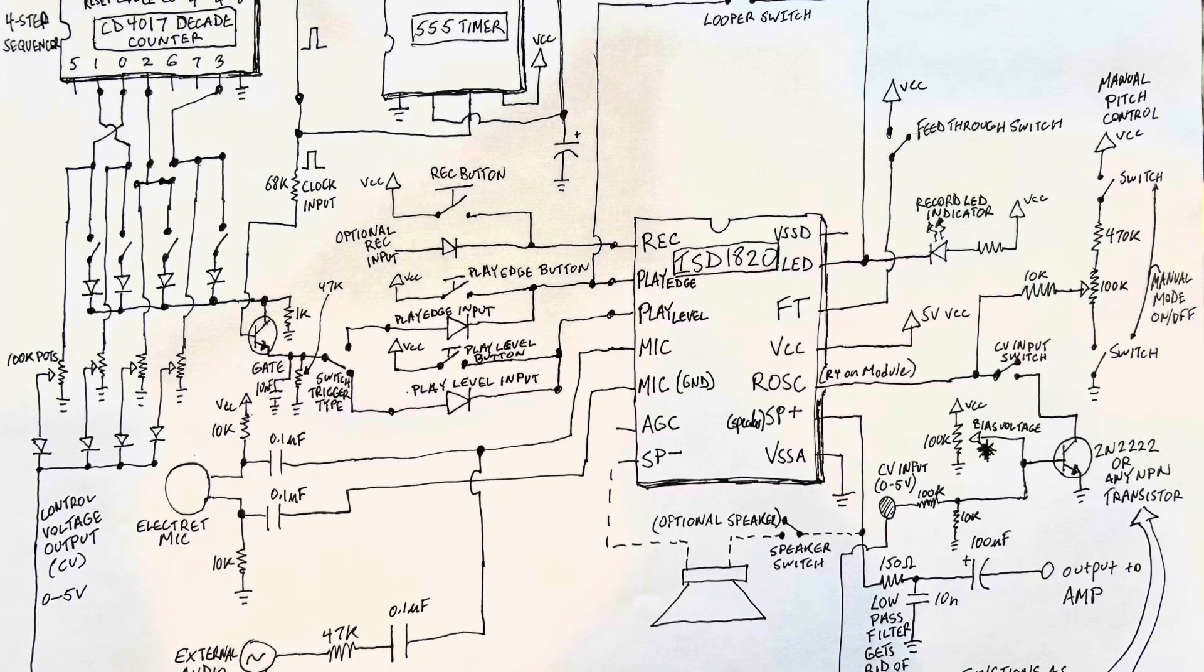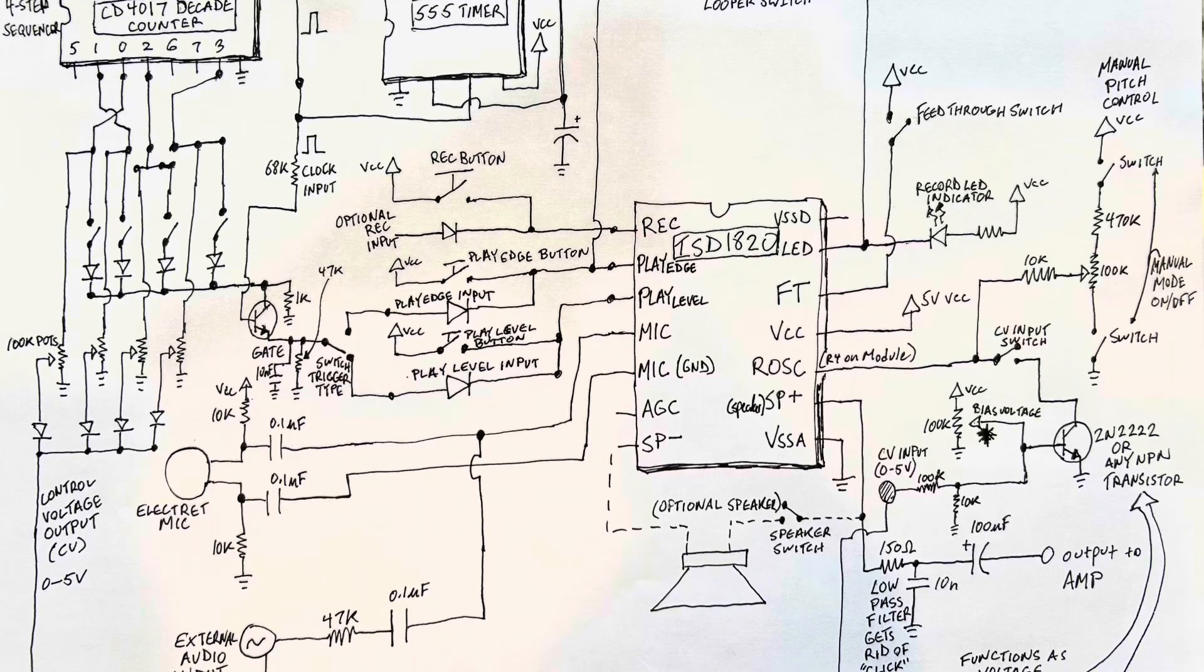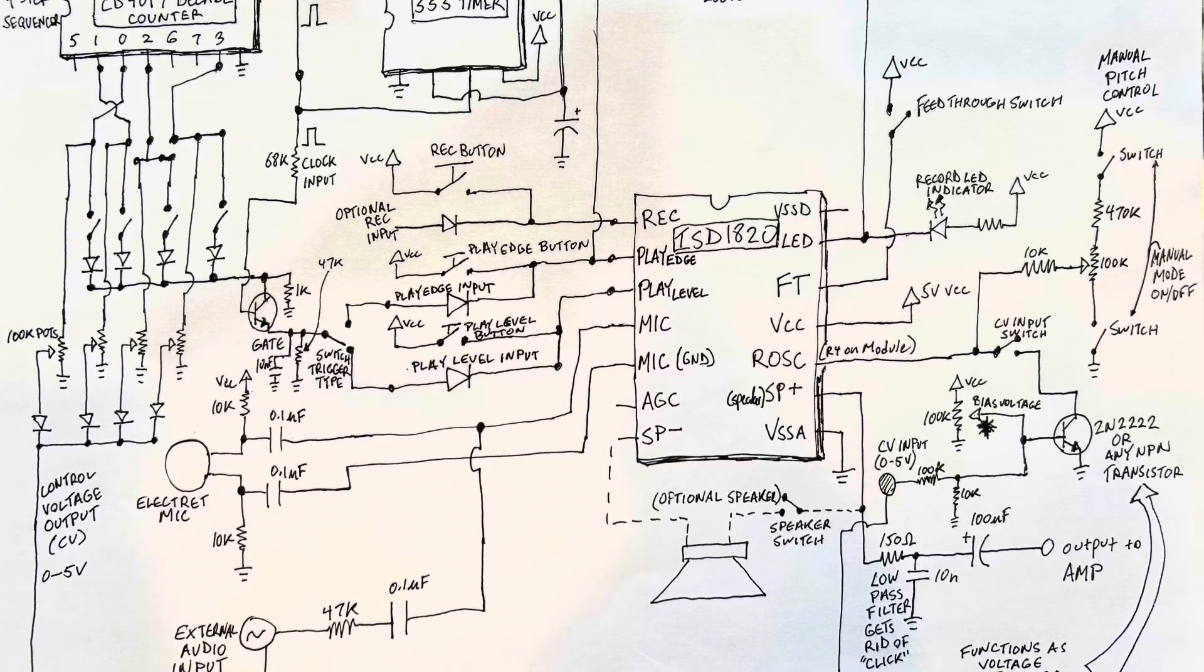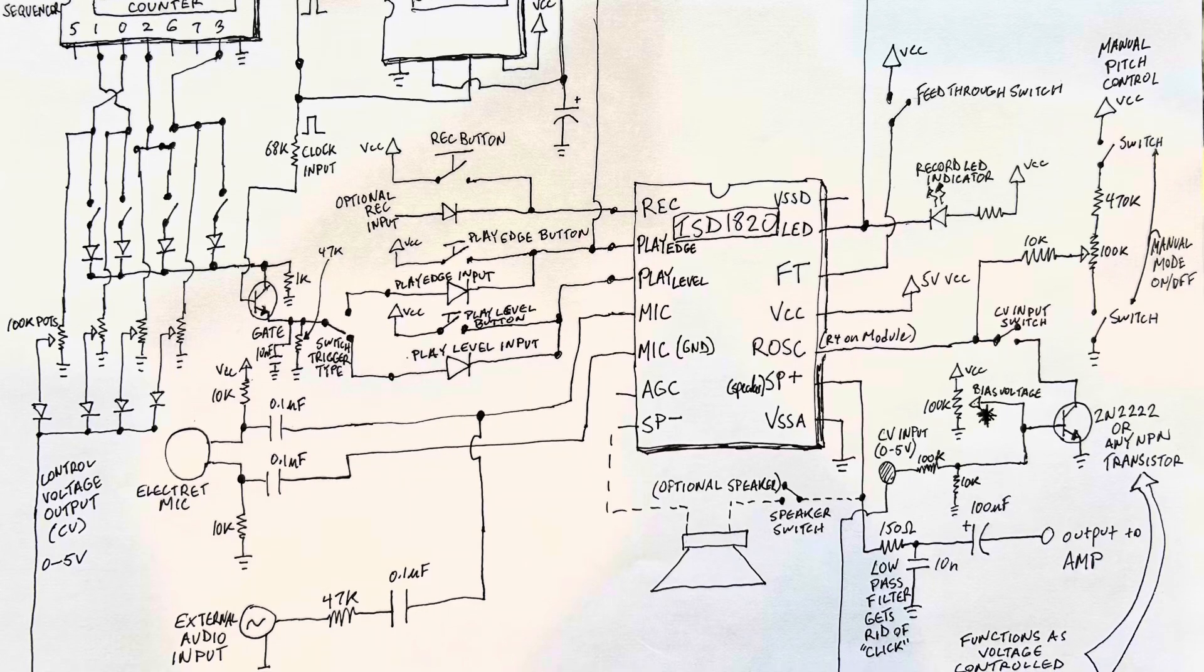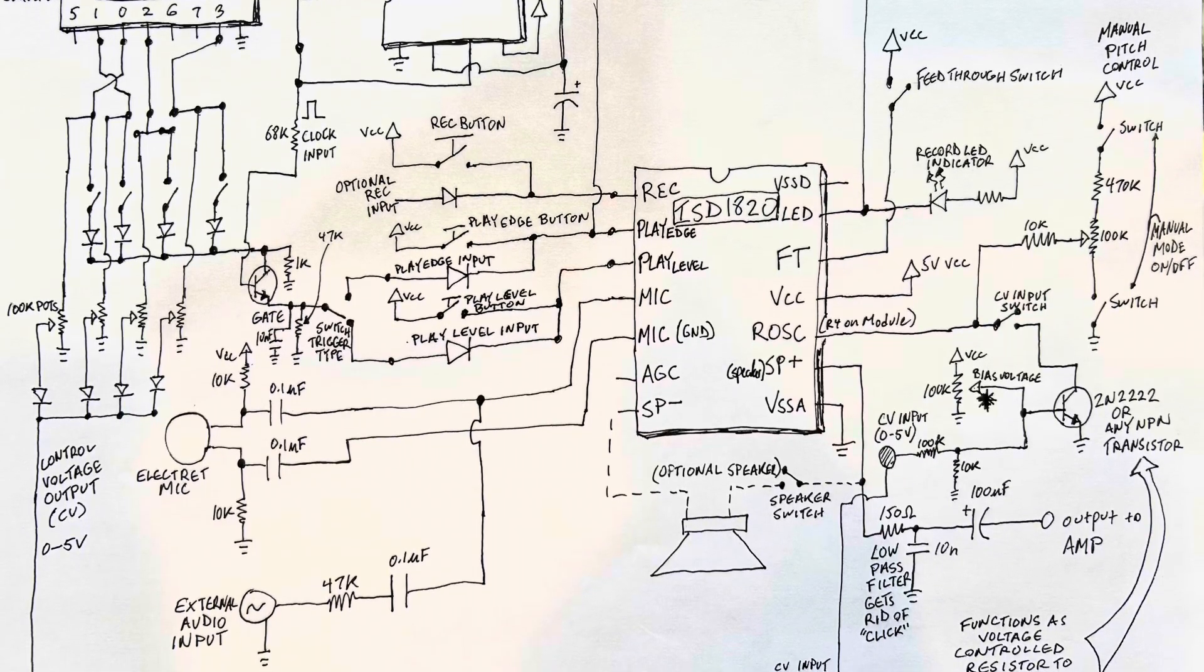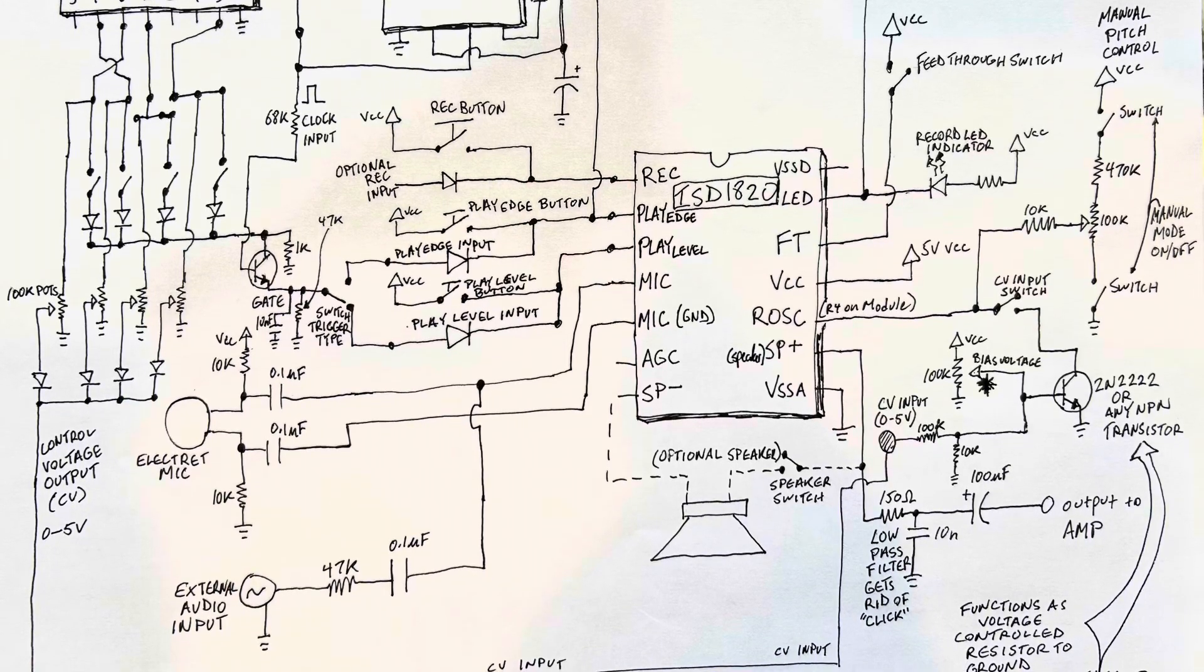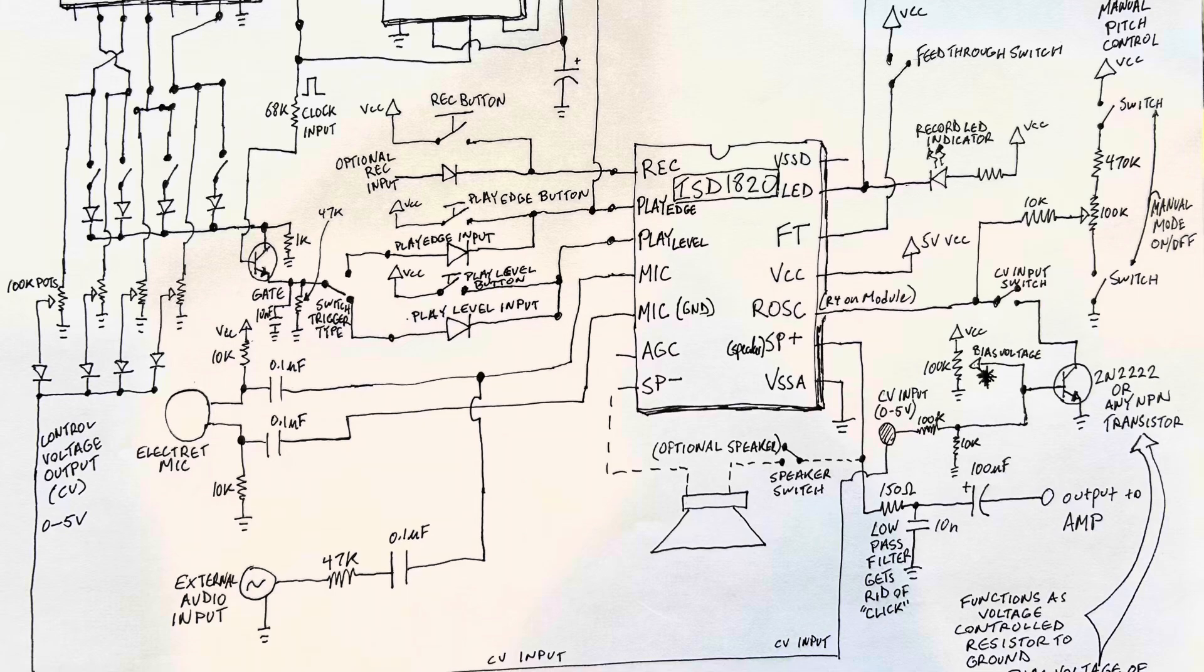But basically this incorporates the 555 timer, the sequencer, the ISD 1820 chip, the control voltage input, as well as the audio line input for all aspects of the circuit.